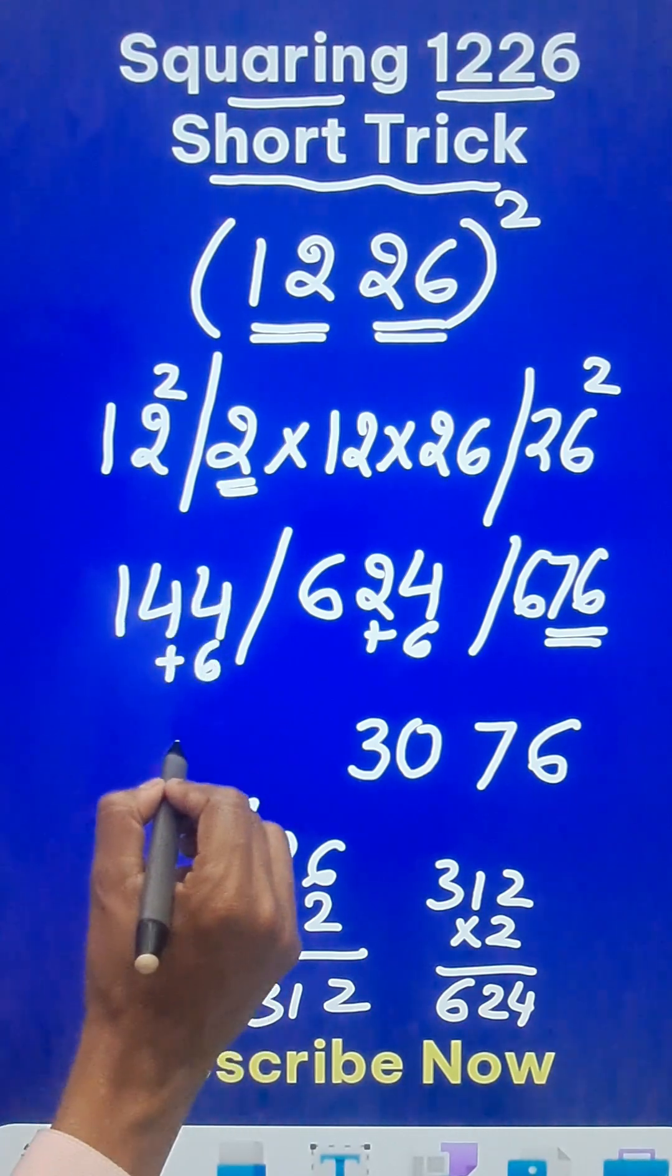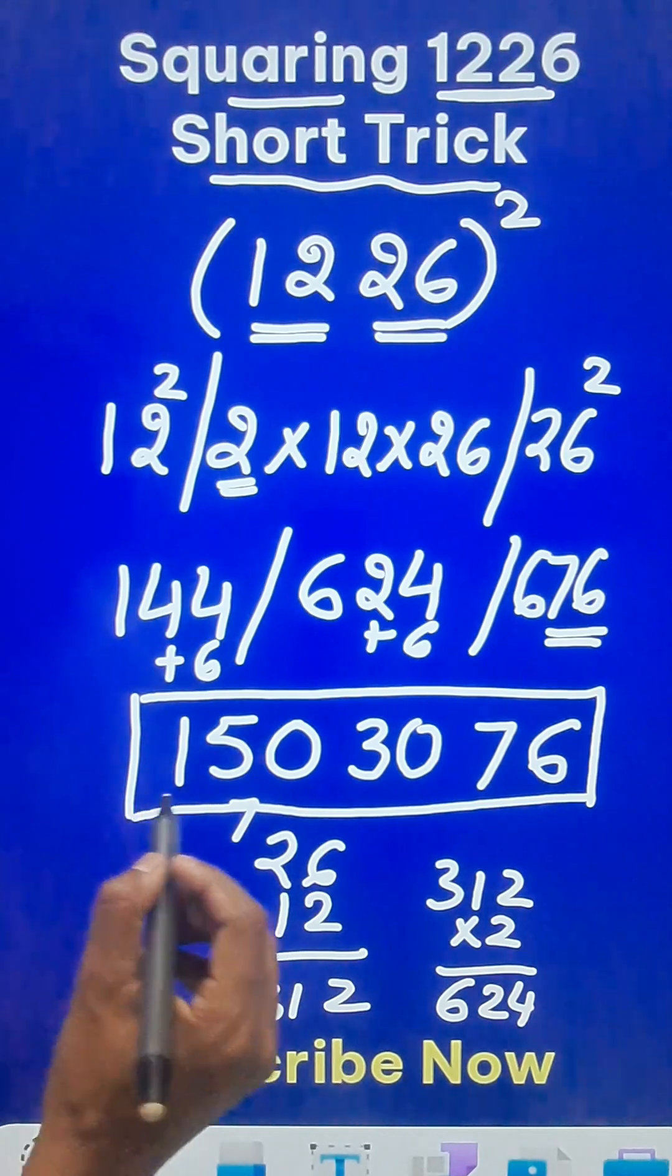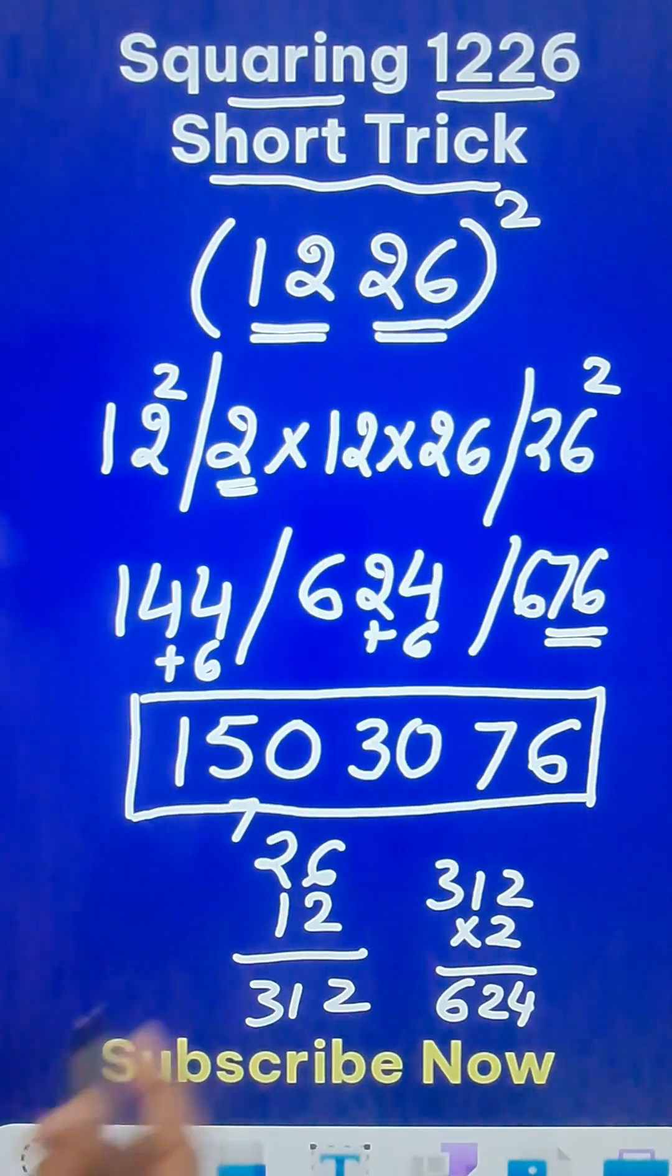144 plus 6 gives you 150, and now you can pick up the calculator and check whether the square of 1226 is 1503076 or not.